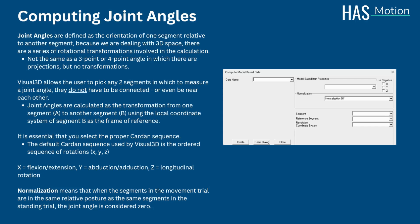The default Cardan sequence used by Visual 3D is the ordered sequence of rotations X, Y, Z, which assumes the following: X being flexion and extension, Y being abduction/adduction, and Z being longitudinal rotation.